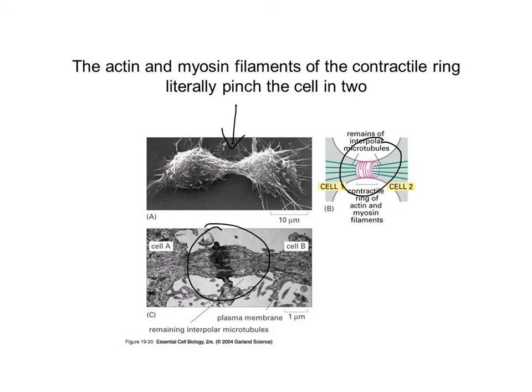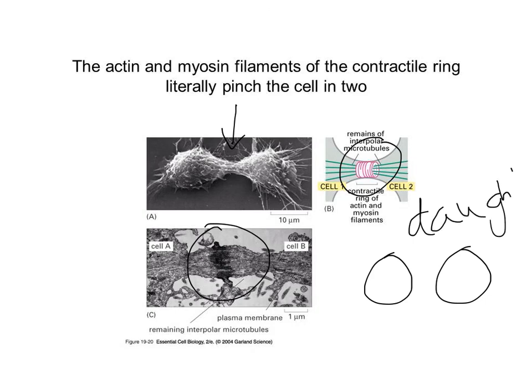At the end of mitosis, you're left with two identical cells, which we call daughter cells. They're identical in DNA content and identical to the original cell. So if there were 46 chromosomes in the cell to start, there will be 46 chromosomes in both cells at the end.